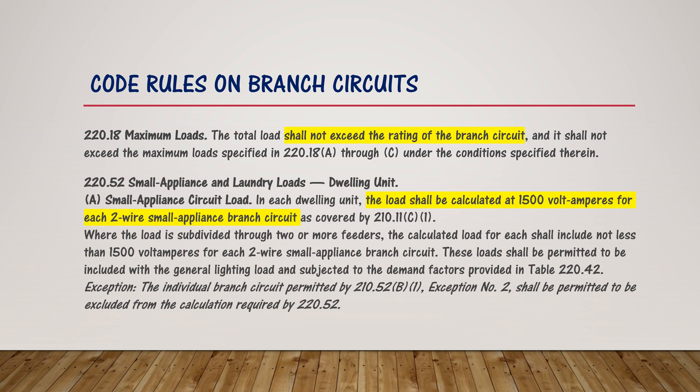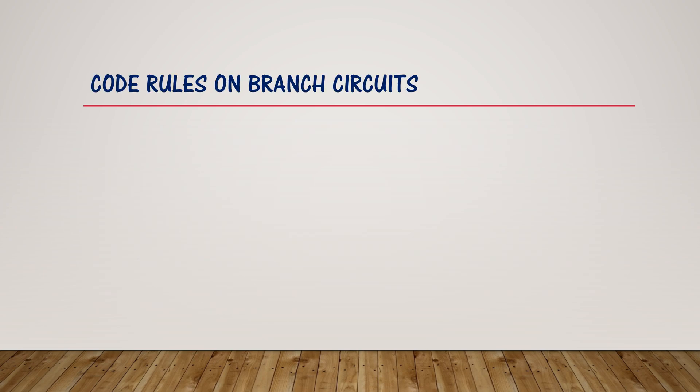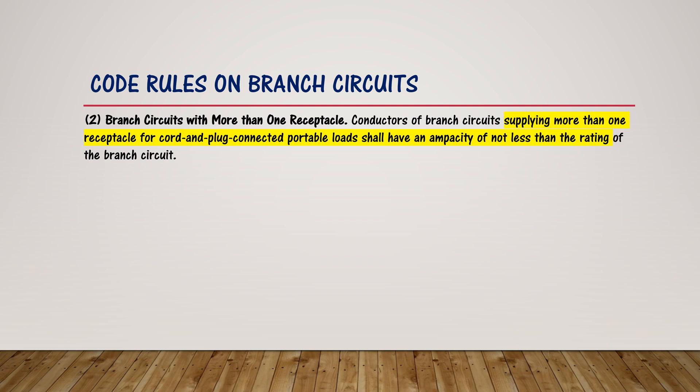Under Section 220.52, 'Small Appliance and Laundry Loads in the Dwelling Unit,' the load shall be calculated at 1500 volt-amperes for each two-wire small appliance branch circuit. This applies if the receptacle is not specified in the plan — you must assume 1500 volt-amperes. Also, branch circuits supplying more than one receptacle for cord-and-plug connected portable loads shall have a conductor capacity not less than the rating of the branch circuit — that is, not less than the overcurrent protection device.